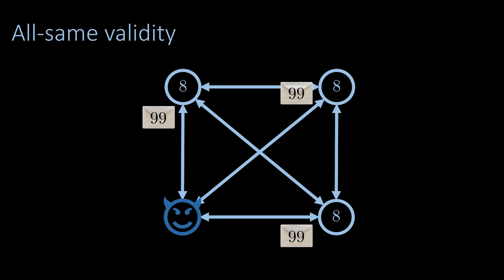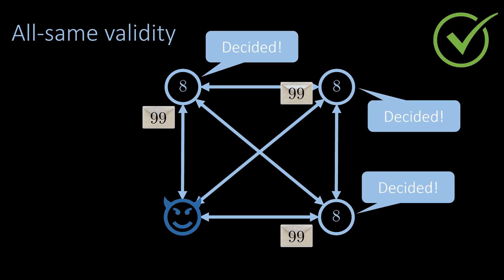As it turns out, the answer is yes. The nodes can agree on this value in this case, so this validity condition is an appropriate choice for the Byzantine agreement problem.